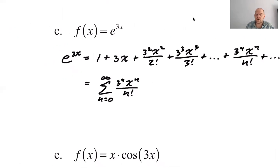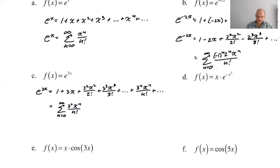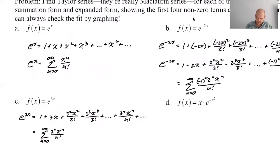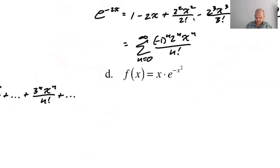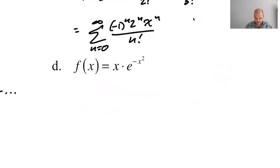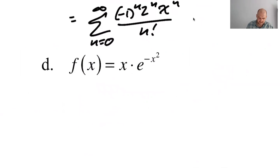These all converge for all x. We could do the ratio test on them — you just end up with the ratio being 0, and that's always less than 1. And if you're not sure, do it — that's kind of the idea.